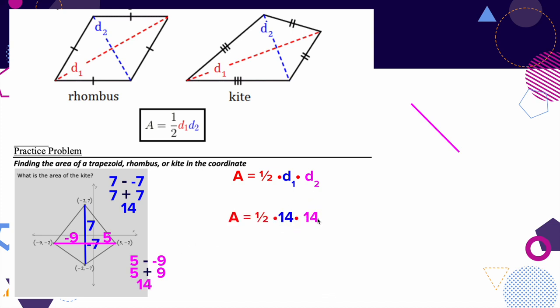Both diagonals are 14, which is just a coincidence. Now 14 times 14 is 196, and dividing by two gives 98 square units. That is how you find the area of a kite on a coordinate grid. I hope that helped and I will see you in the next video.